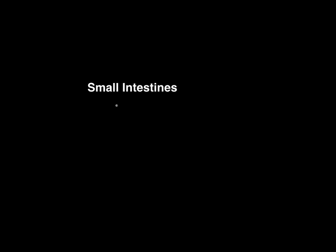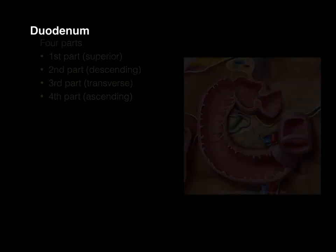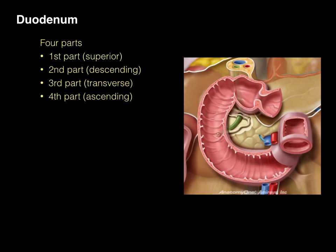The small intestines include the following components: the duodenum, jejunum, and ileum. Let's take a look at the duodenum first. The duodenum has four parts, and they're called the first part, second part, third part, and fourth part.